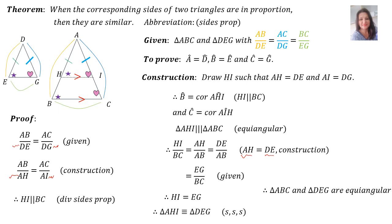Therefore, triangle ABC and triangle DEG are equiangular. Therefore, triangle ABC is similar to triangle DEG.